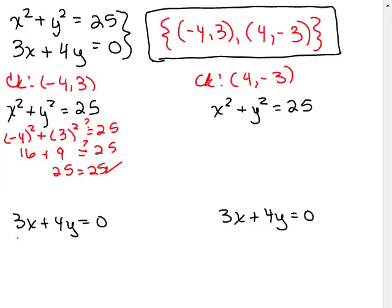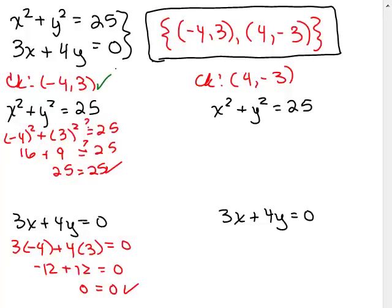Then we're going to plug in negative 4 for x and 3 for y and make sure this is true. So negative 12 plus 12 equals 0. Negative 12 and 12 does equal 0. So yes. All right, so negative 4, 3 is definitely a solution. That checks.